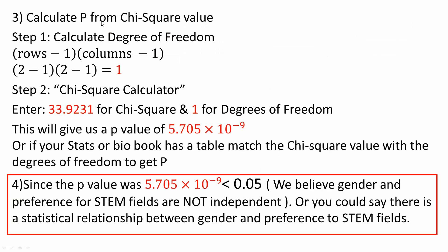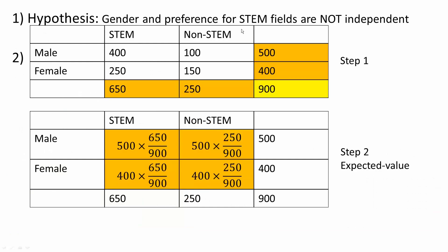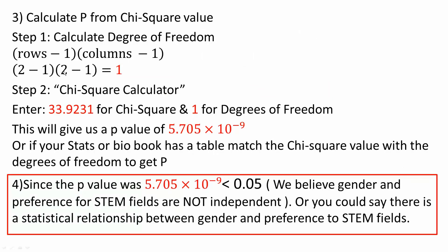Now we calculate p from the chi-square value. First, we need the degree of freedom, which is rows minus 1 times columns minus 1. We have two rows (STEM and non-STEM) and two columns (males and females), so 2 minus 1 times 2 minus 1 equals 1 degree of freedom. Using an online chi-square calculator, enter 33.9231 for chi-square and 1 for degree of freedom, giving a p-value of 5.705 times 10 to the negative 9.